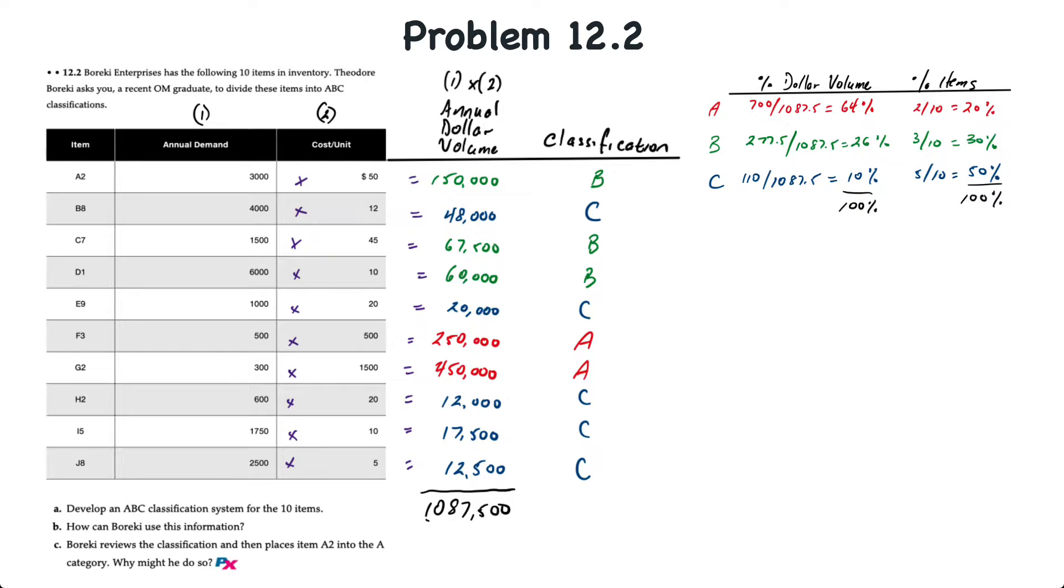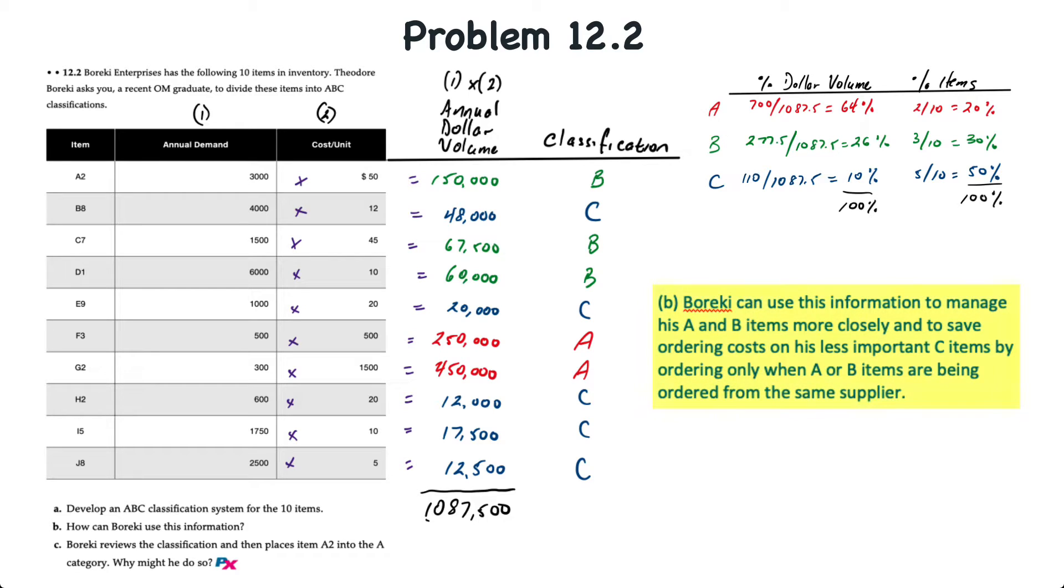So for requirement B, we're asked how the manager can use that information. Essentially, ABC classification is used to help us manage A and B items more closely and to save ordering costs on the less important C-level items by ordering only when A or B items are being ordered from the same supplier, for example.